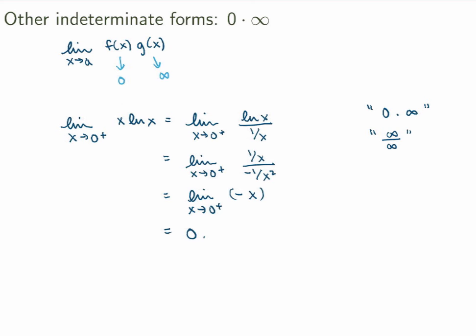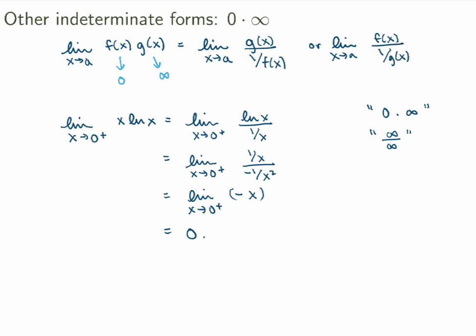The idea here was the crucial first step: rewrite the expression so that we end up in either a 0 over 0 or infinity over infinity case. Generally speaking, you want to rewrite the expression either as g of x over 1 over f of x, giving infinity over infinity, or as f of x over 1 over g of x. Either case may work, so you have to try, and then you can use L'Hôpital's rule to evaluate the limit.